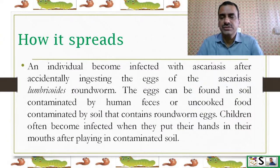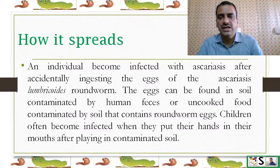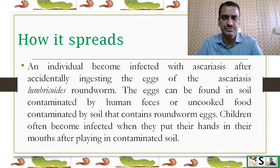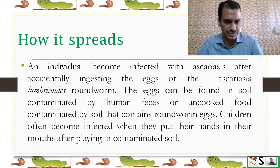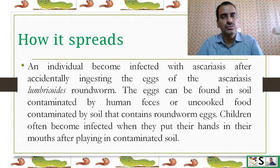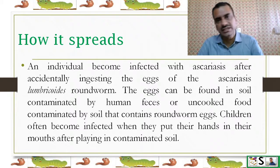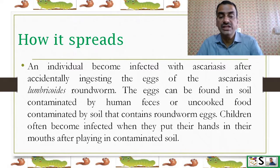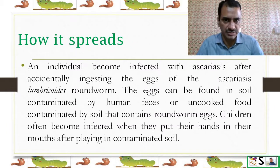How does it spread? An individual becomes infected with Ascaris after accidentally ingesting the eggs of Ascaris lumbricoides. The eggs can be found in soil contaminated by human feces, especially in areas of open defecation, or in uncooked food contaminated by soil containing roundworm eggs. Children often become infected when they put their hands or fingers in their mouth after playing in contaminated soil.